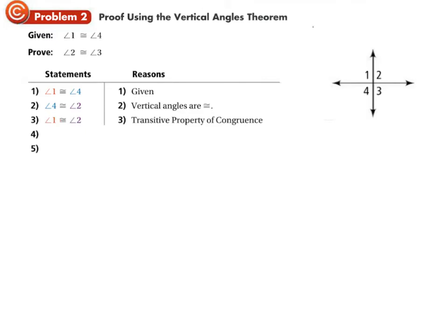That's a new statement not given to us, but we can make it knowing our rules: angle one is congruent to angle two. Also, angle one is congruent to angle three because they're vertical angles. Since they're both congruent to angle one, by the transitive property of congruence, angle two is congruent to angle three — which is exactly what we were trying to prove.